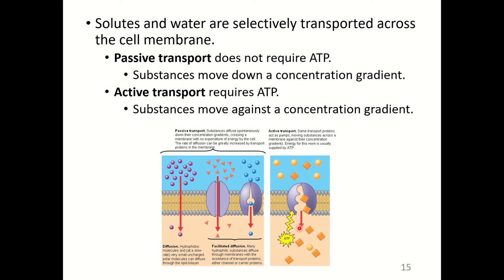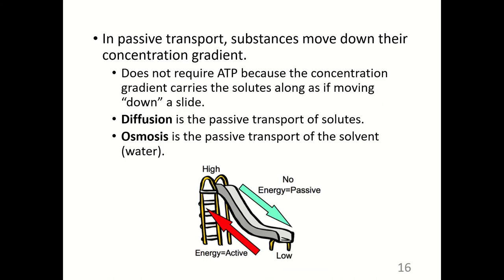In active transport, we are going from a lower concentration to a higher concentration. The sodium-potassium pump uses energy in the form of ATP to actively pump potassium ions from a lower concentration to a higher concentration — this is what is meant by going against a concentration gradient. In passive transport, the concentration gradient carries the solutes along as if moving down a slide.